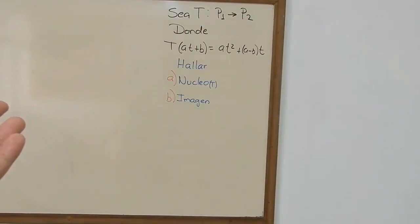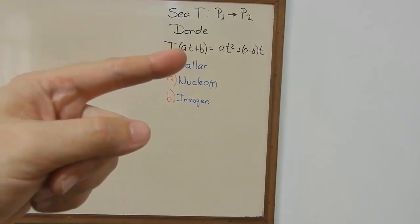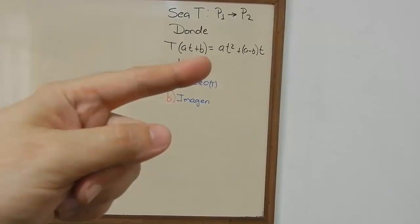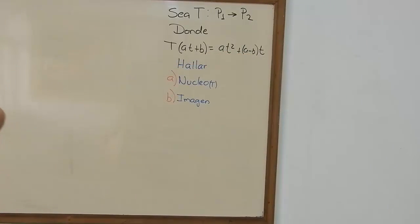I'll do my best to change it a little. So let it be the transformation of polynomials of order 1. As you can see, A times t plus B is equals to A·t² plus (A minus B)·t. And we're gonna find the nucleus and we're gonna find the image, which is also known as the range.